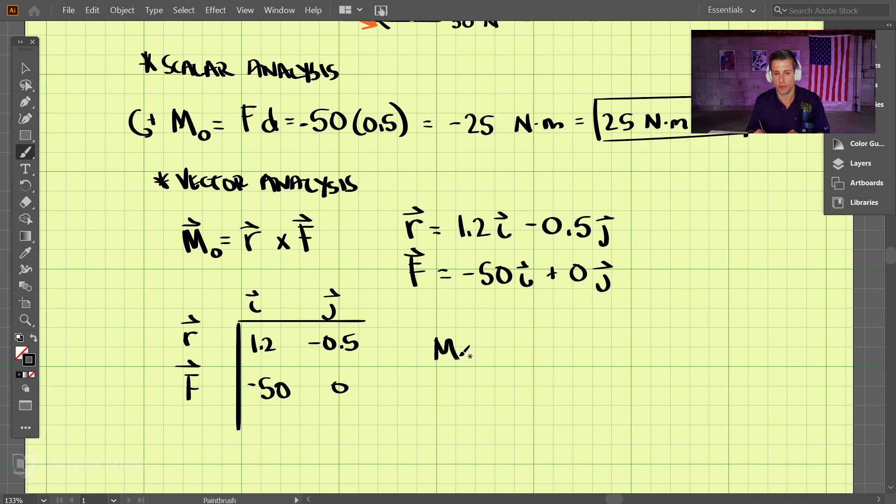So the moment about O is in the K direction. We have 1.2 times 0, which is 0, minus negative 50 times negative 0.5. That comes out to negative 25 Newton meters in the K direction.